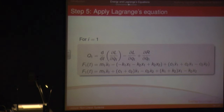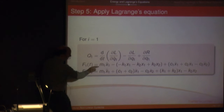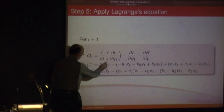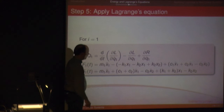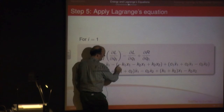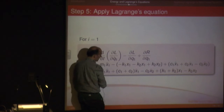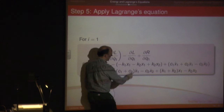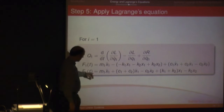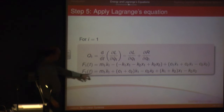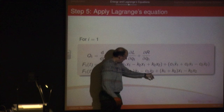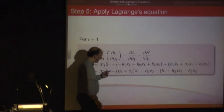Then you apply Lagrange's equation. Our generalized force is at Q1. The D/DT term gives M1 X1 double-dot. The DL/DX1 term has a minus sign in Lagrange's equation so those terms become positive, and then we have our damping term from R. If you rearrange, sorting out the terms multiplied by X1 double-dot, X1-dot, X2-dot, X1, and X2, you get the first equation of motion.